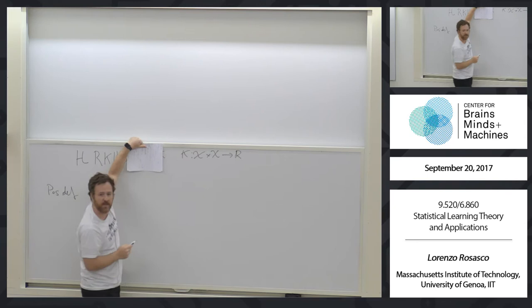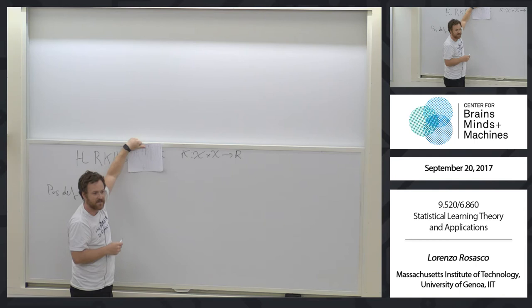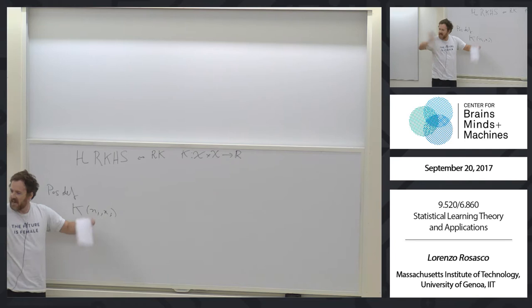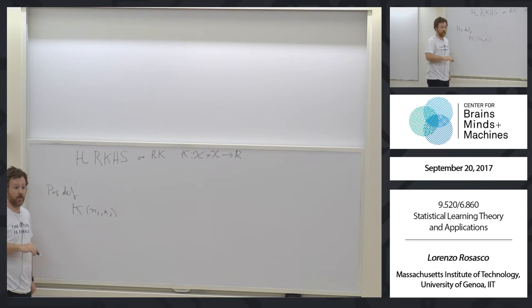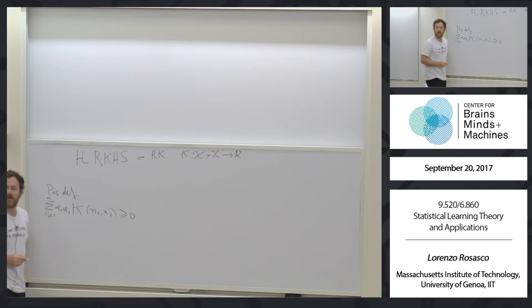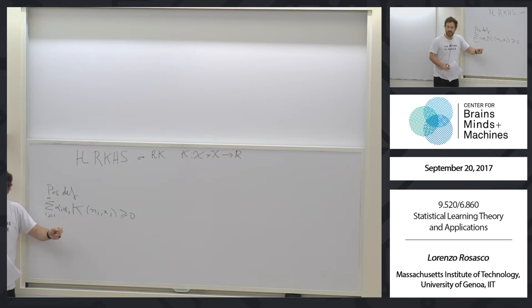Do you remember what positive definite meant? We call a function of two variables positive definite if: you take k, form a matrix with entries k(x_i, x_j) for any choice of points, and the matrix you obtain has eigenvalues that cannot be negative — they can be zero or positive. This can be written as the quadratic form having to be non-negative: sum over i,j of alpha_i alpha_j k(x_i, x_j) is greater than or equal to zero. Note: we say the function is positive definite even if we allow the zero case — it's what makes the matrix positive semi-definite.